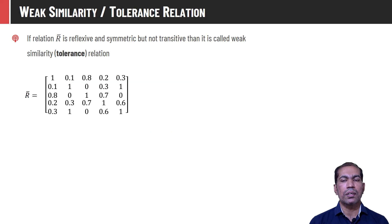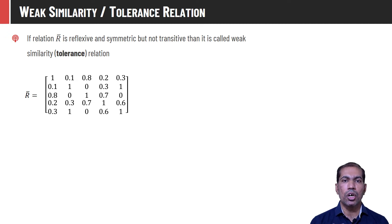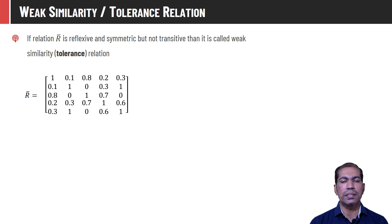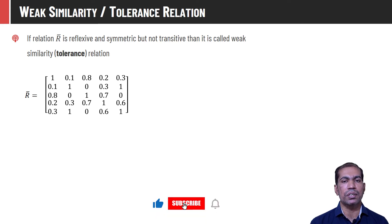Weak similarity, or the tolerance relation: if a given relation is reflexive and symmetric but not transitive, then we can say that it is a weak similar or tolerance relation. As we can see for the given relation matrix R̄, all diagonal elements have membership value 1, hence it is reflexive. The transpose of matrix R̄ is the same as R̄, hence it is symmetric. But R̄² of this relation is not contained in R̄, and hence it is not transitive. So this is a weak similar or tolerance relation.